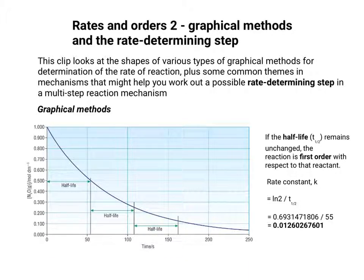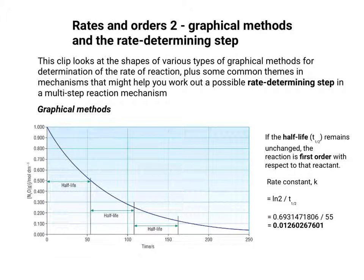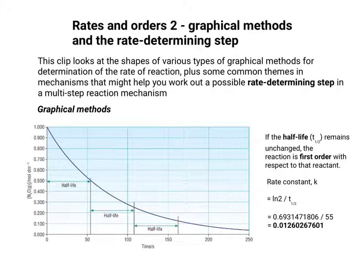For example, looking at the graph, the half-life is roughly 55 seconds. So taking the natural log of 2, which is 0.6931471806, divided by 55, gives you a rate constant of approximately 0.01260267601. That's one way of working out the value for the rate constant.